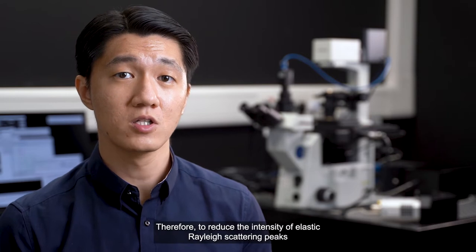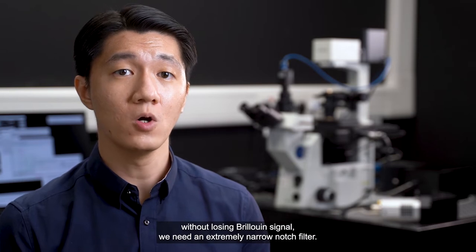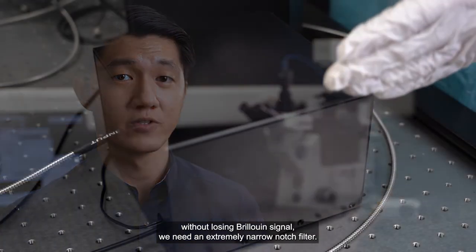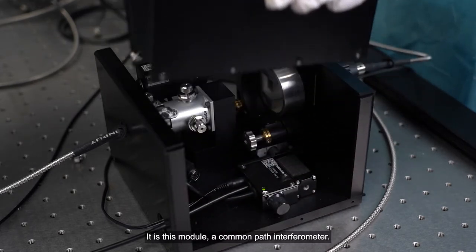Therefore, to reduce the intensity of elastic Rayleigh scattering peaks without losing Brillouin signal, we need an extremely narrow notch filter. It is this module, a common path interferometer.